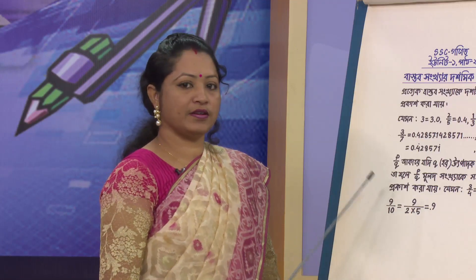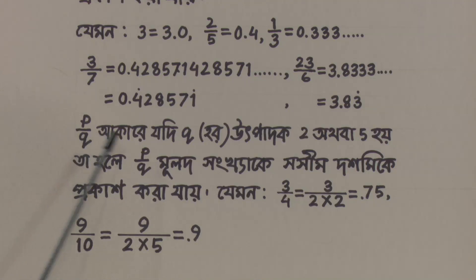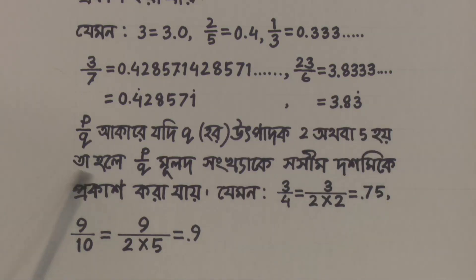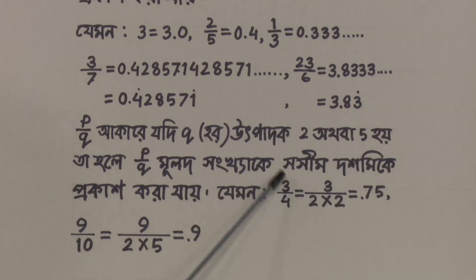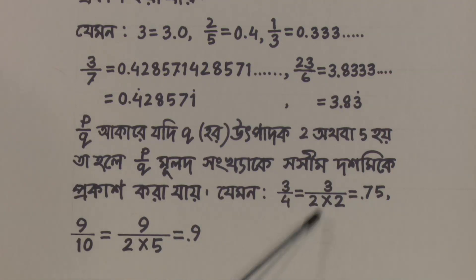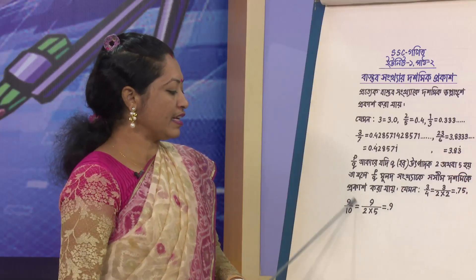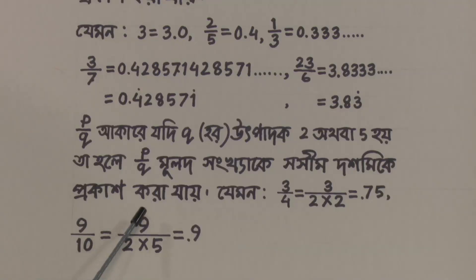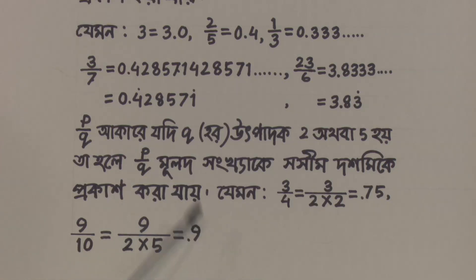If P by Q is a rational number, and if Q has only factors of 2 or 5, then P by Q can be expressed as a terminating decimal. For example, 3 divided by 4.